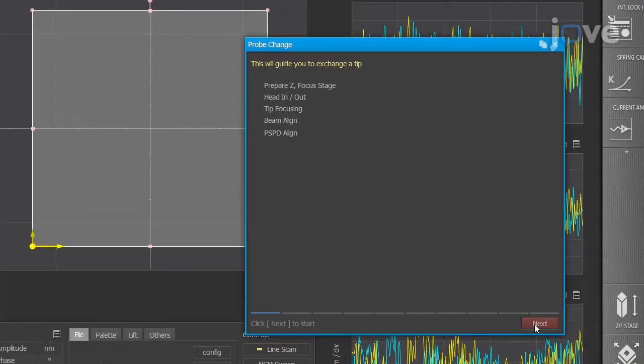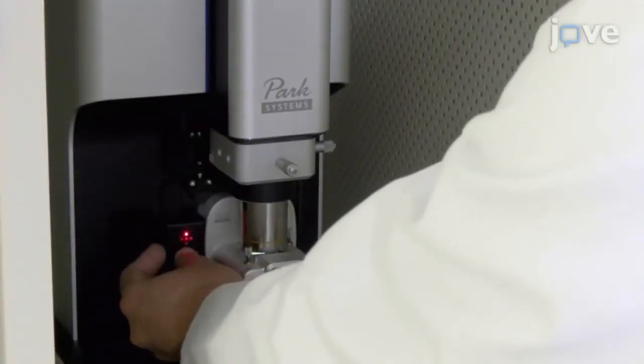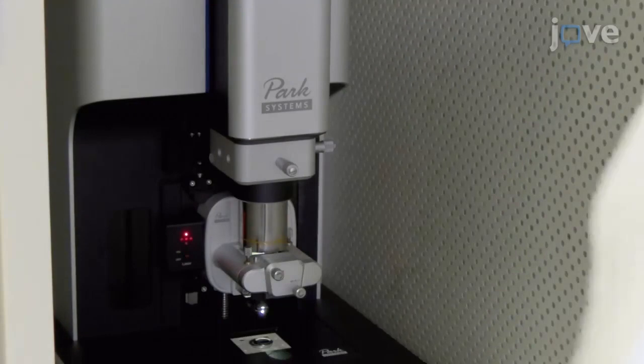In the Probe change window, click Next to prepare Z focus stage, then turn off the AFM beam switch if it is on and unlock the dovetail locks.